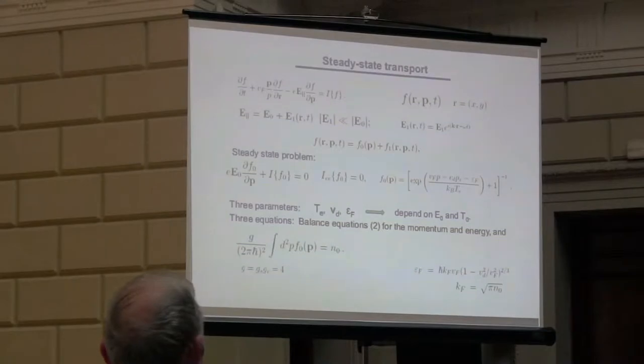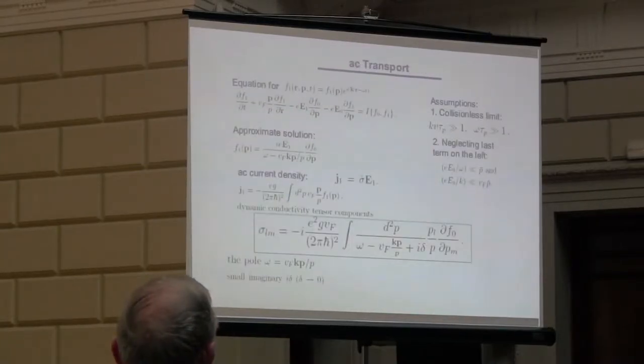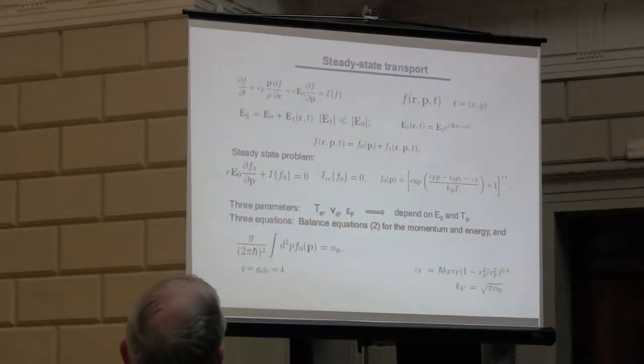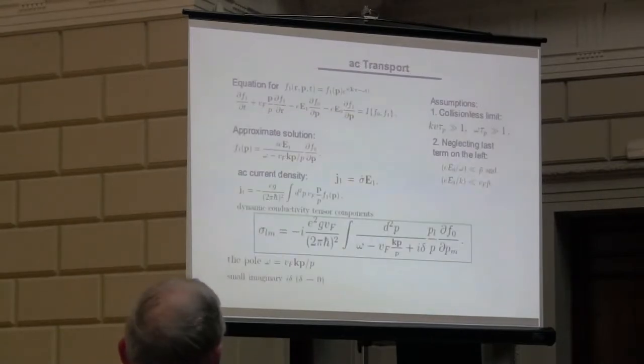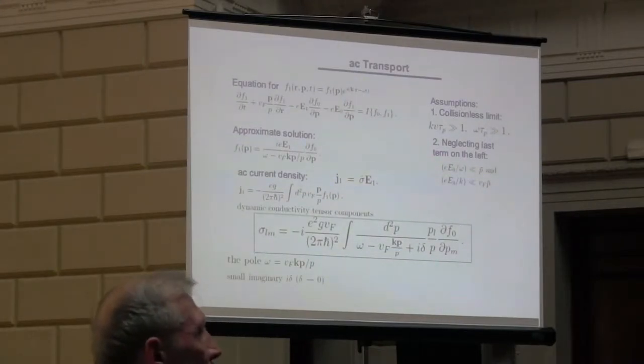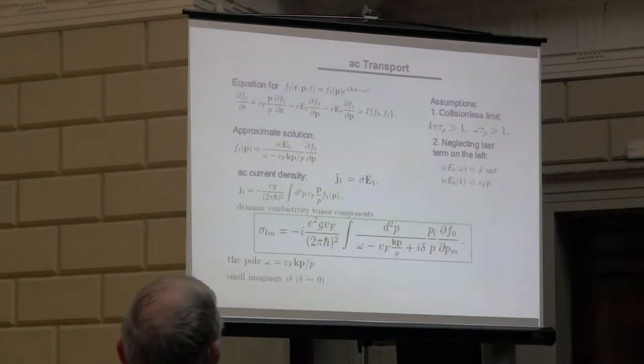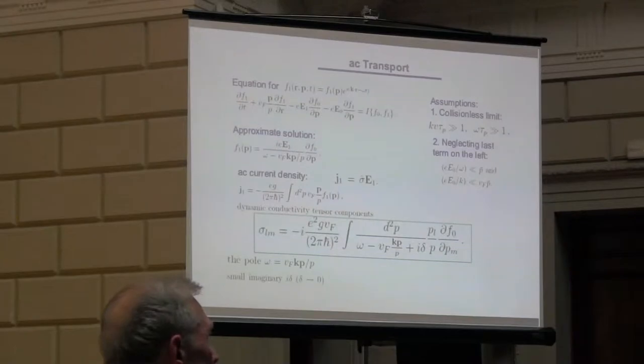Regarding steady-state transport, we will use the well-justified background approximation based on the shifted distribution function in the momentum space, described by three parameters shown here. This is the electron frequency drift velocity and the Fermi energy, which are determined by the appropriate balance equations. Regarding the AC transport, we go to high frequency and neglect the collisional integral. The kinetic equation is reduced to the so-called Vlasov equation which has analytical solution.